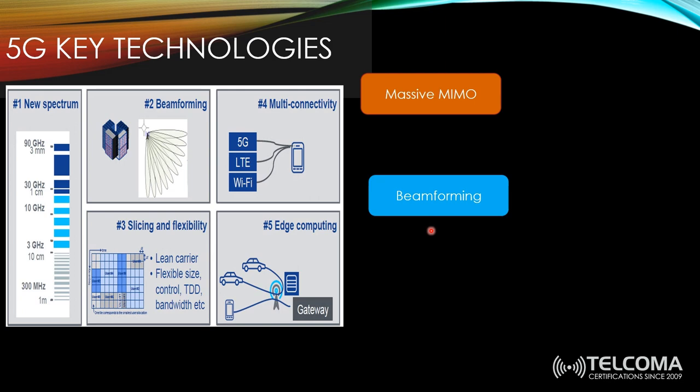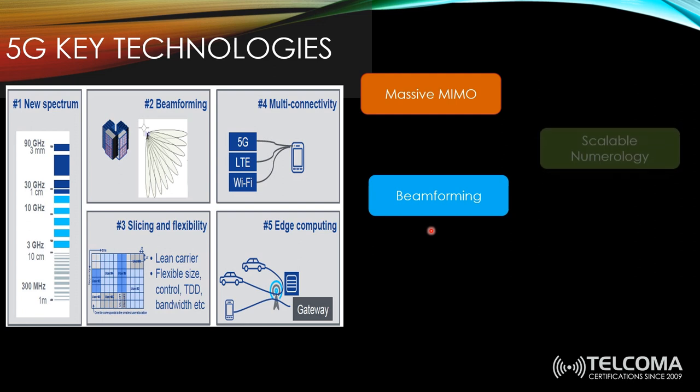For example, Huawei's AAU 5613 supports up to 16 layers in the downlink and four or eight layers in the uplink for spatial multiplexing. It supports massive MIMO with a 64T64R antenna configuration.